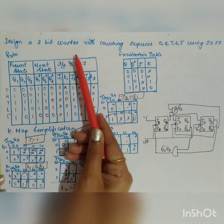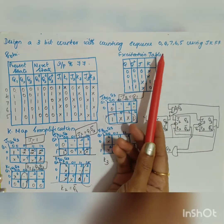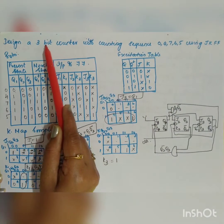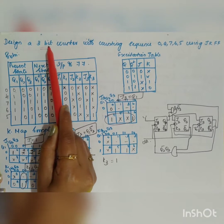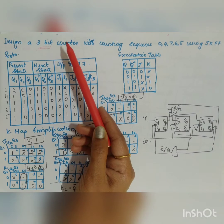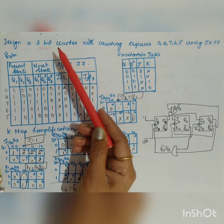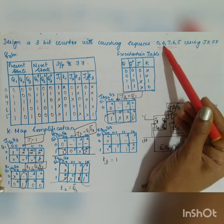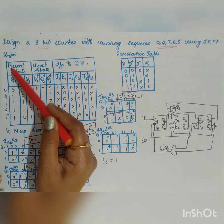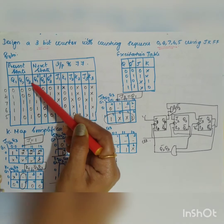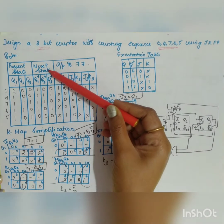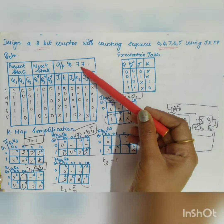The next question is: design a 3-bit counter with counting sequence 0, 4, 7, 6, 5 using JK flip-flops. Since it is a 3-bit counter, n equals 3, giving 2³ = 8 combinations (0 to 7). However, the counting sequence given is 0, 4, 7, 6, 5. Let us take the present state Q1 Q2 Q3 and find the next state and input to the flip-flops.